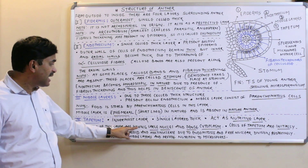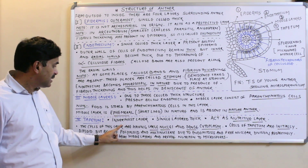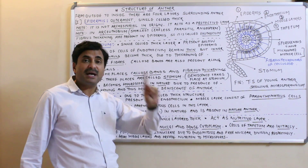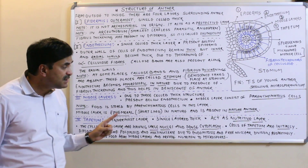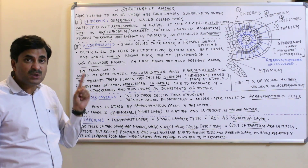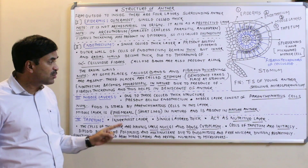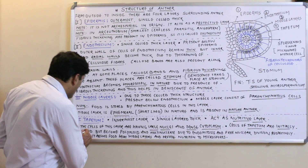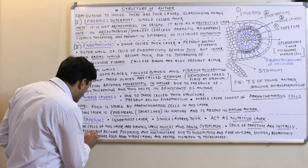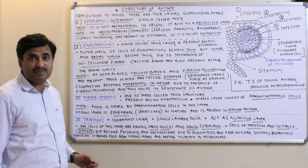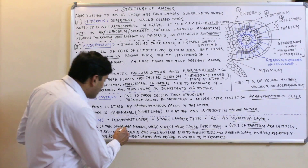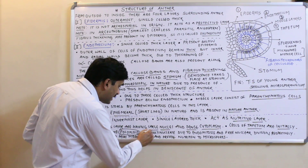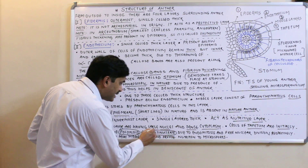The cells of the tapetum layer have large nuclei and dense cytoplasm. Cells of the tapetum are initially diploid — this is asked in examinations — but later on become polyploid and multinucleate.